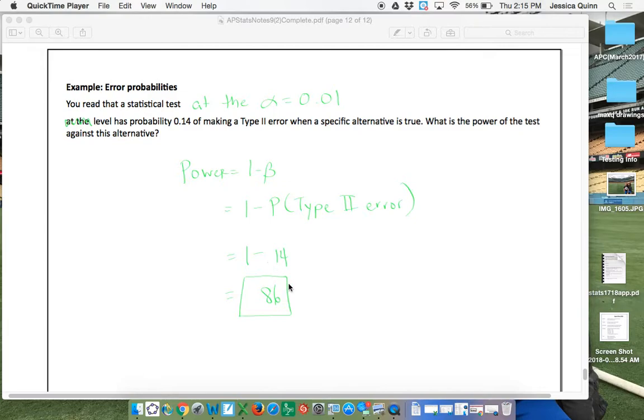So the power of the test is 0.86. So you have an 86% chance that you'd reject the null if the alternative is true. So there you go.